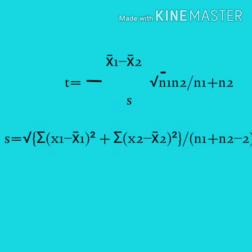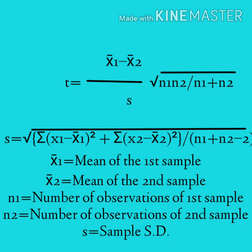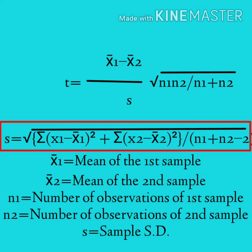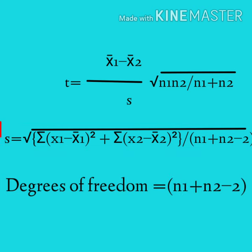To test the difference between the means of two independent samples, apply this formula: t = (x̄₁ − x̄₂) / (s × √(n₁·n₂ / (n₁+n₂))), where x̄₁ is the mean of the first sample, x̄₂ is the mean of the second sample, n₁ is the number of observations in the first sample, and n₂ is the number of observations in the second sample. s is the sample standard deviation: s = √(Σ(x₁−x̄₁)² + Σ(x₂−x̄₂)²) / (n₁+n₂−2), and the degrees of freedom is n₁+n₂−2.